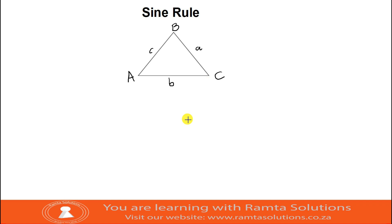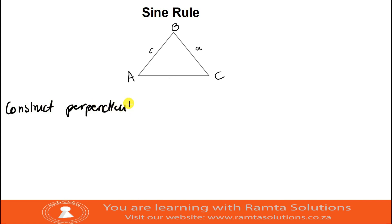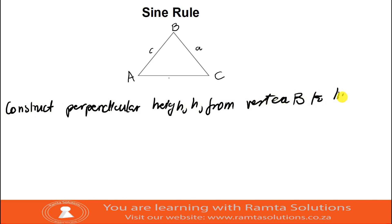Let us now find our sine rule. First, we will construct perpendicular height H from vertex B to line AC. This gives us our perpendicular height here. I want to call this point here point D. I also need to remind you that this side — side AC — was equal to b.